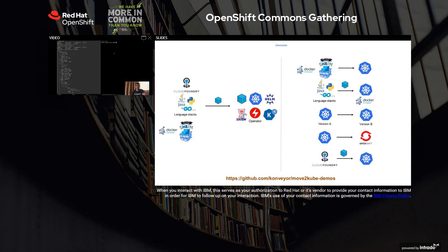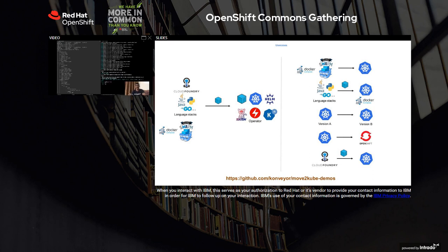This could be a Cloud Foundry application or one normally deployed to VMs. We'll look at how it can be translated to Kubernetes using a one-step process since it's a simple use case. The first thing is to do a Move2Kube translate pointing to the samples/e2e-flow folder. It goes through each file, analyzes them, and then interacts with you whenever it has a question. Now it says it has identified two services and is asking if you want to translate all of them.